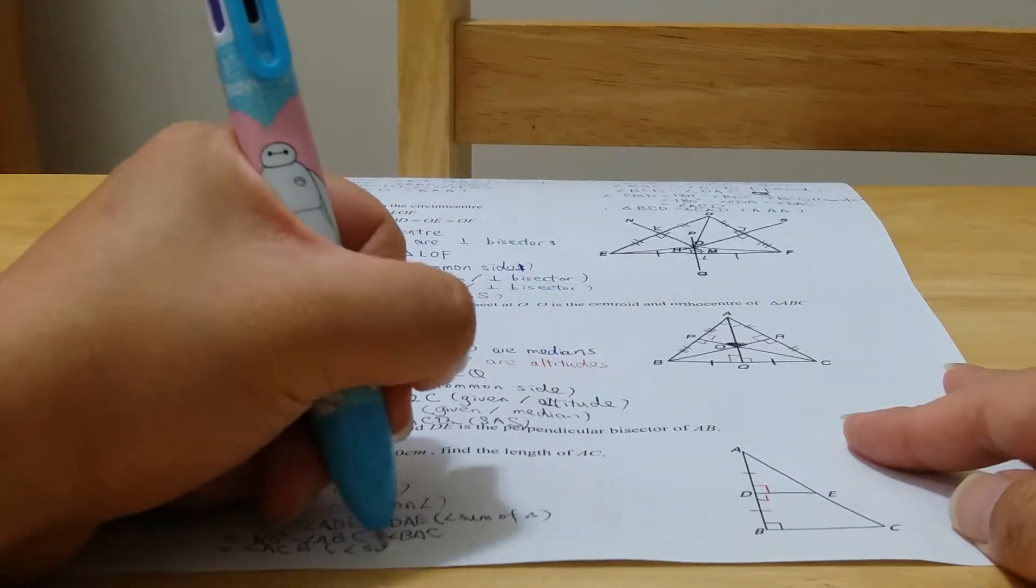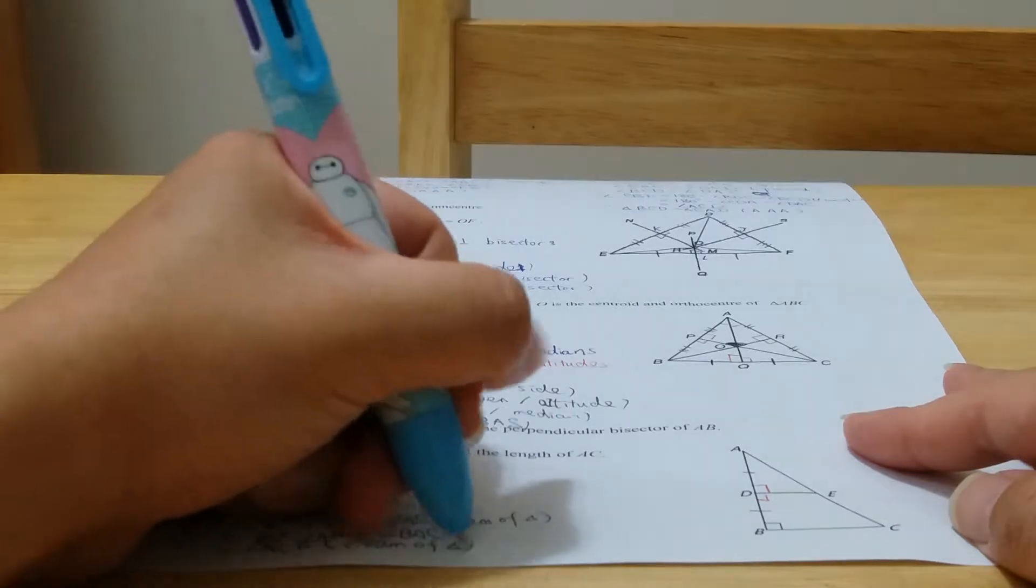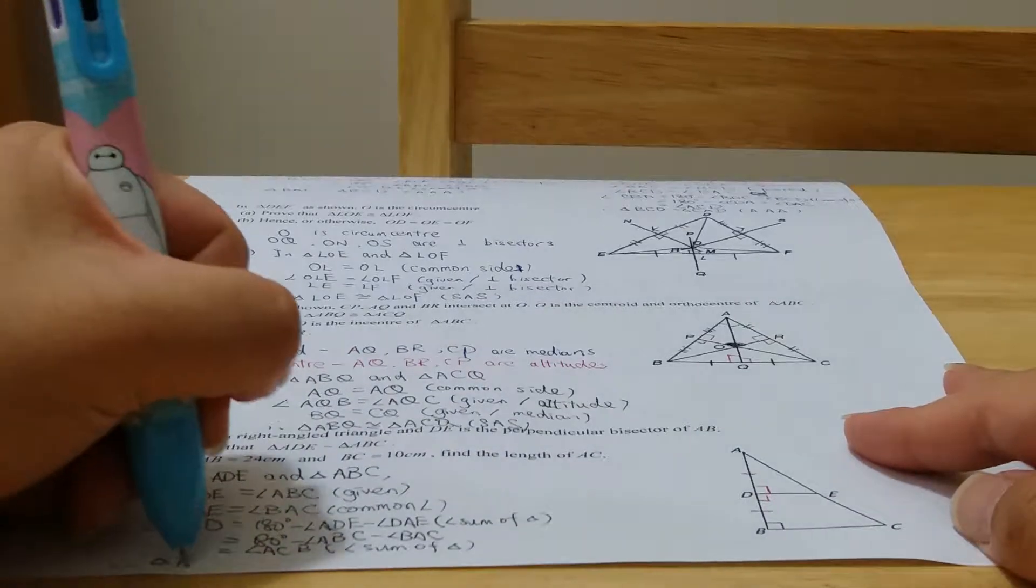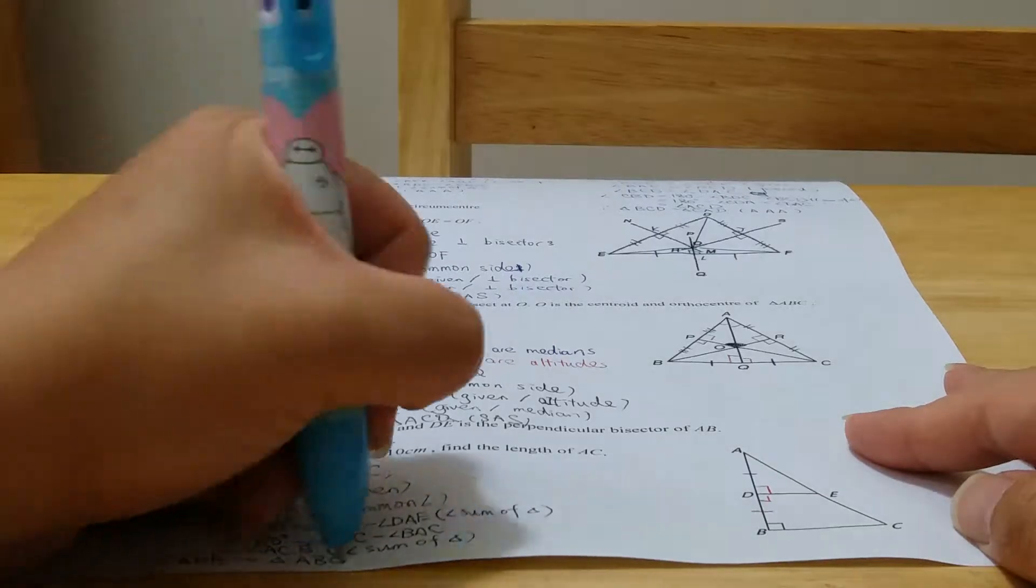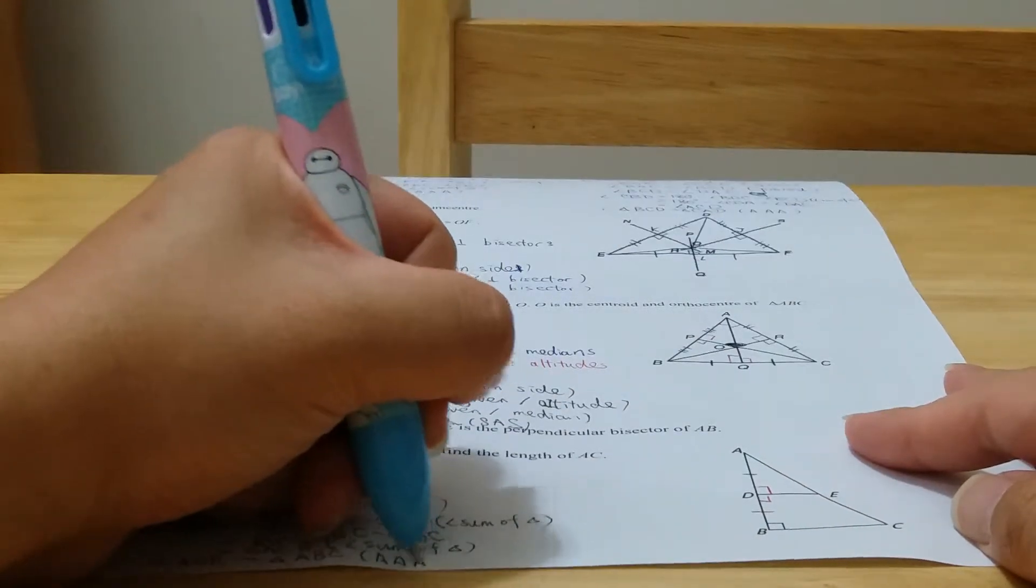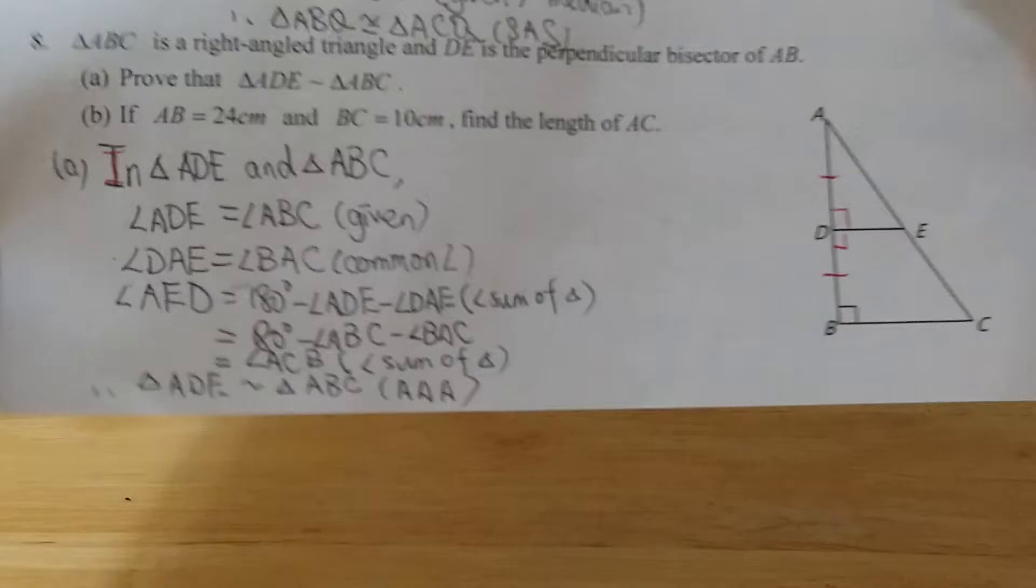Once again, angle sum of triangle. So we know that this is similar. ADE is similar to ABC. A, A, A. Okay, for these questions.